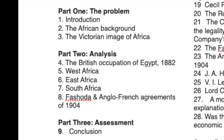Fashoda and the Anglo-French agreements mark the point towards the end of the scramble for Africa when everything was pretty much settled. We then see a transition into the alliance system, which would lead up to World War One. Part three, the conclusion, asks: did the scramble for Africa lead to more cooperation or more conflict between European powers? This is something you'll have to think about and answer yourself.